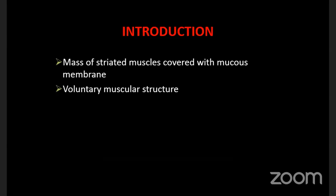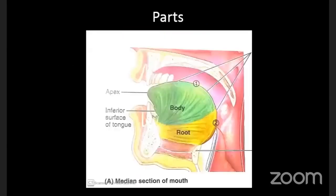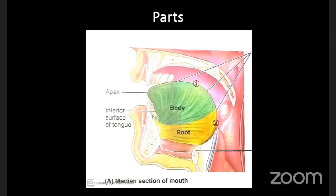The tongue is divided into three parts - a very basic concept. There is a tip, a body, and a root. The tip is called the apex, which is the anterior free end of the tongue that usually comes in contact with the central incisor teeth. The root is the most posterior part of the tongue, attached to the mandible and the hyoid bone by means of certain muscles.